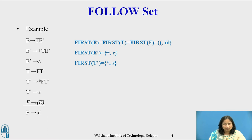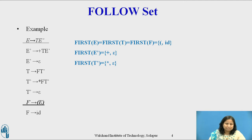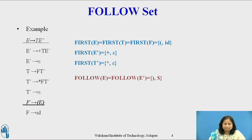By Rule 2 applied to the production F derives left-parenthesis E, the right parenthesis is also in the follow of E. By Rule 3 applied to the production E derives T E', dollar and right parenthesis are in the follow of E'. Hence, follow(E) equals follow(E') equals {right-parenthesis, dollar}.